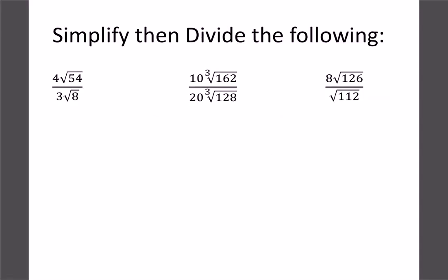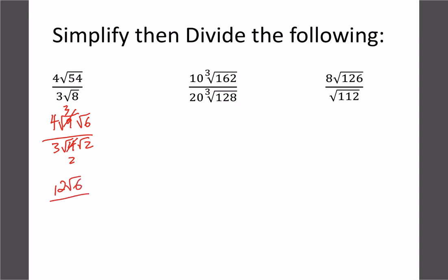Let's try some where we need to simplify first because they don't divide evenly. For root 54 over root 8: 54 breaks into 9 and 6, and 8 breaks into 4 and 2. Root 9 is 3 and root 4 is 2, giving 12 root 6 on top and 6 root 2 on the bottom, which divides to 2 root 3. Simplifying first definitely helps here.